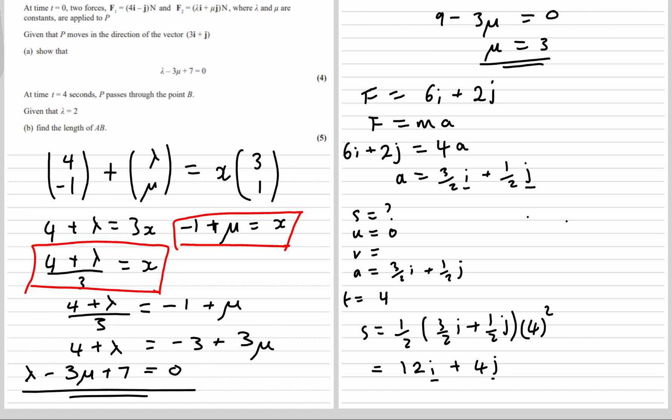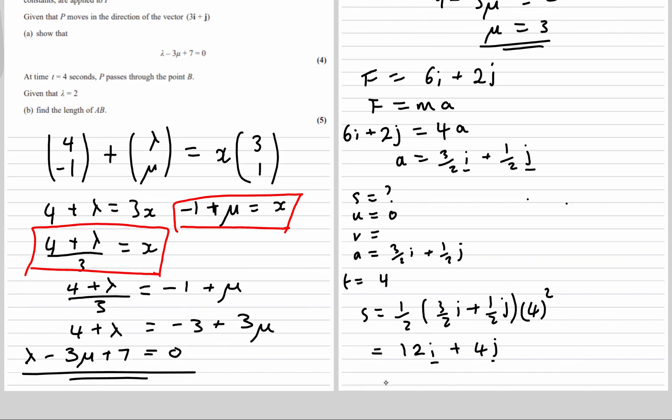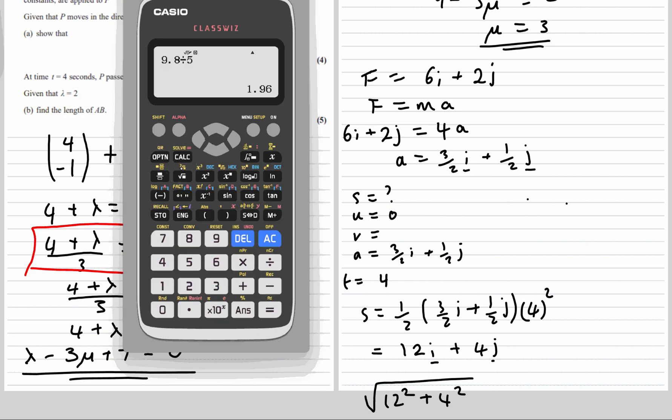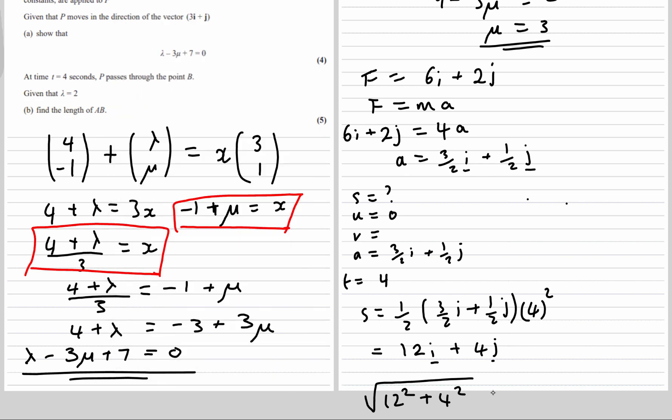We want the length, so let's use Pythagoras. That's the square root of 12 squared plus 4 squared. So the distance is 4 root 10 meters.